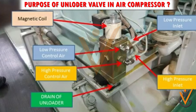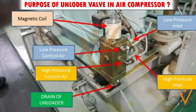Purpose of the unloader valve and moisture drain valve in an air compressor: at starting, this valve must be opened. This reduces the starting torque for the machine and clears out any accumulated moisture and oil in the system.